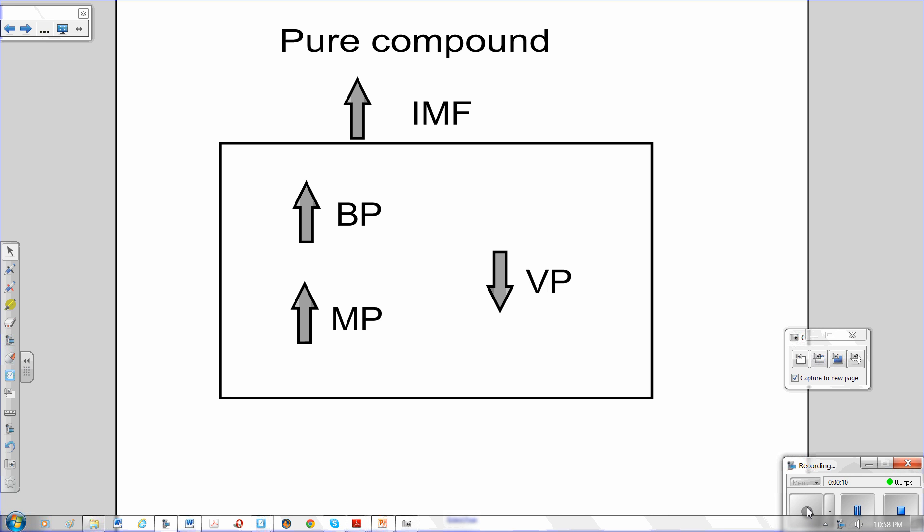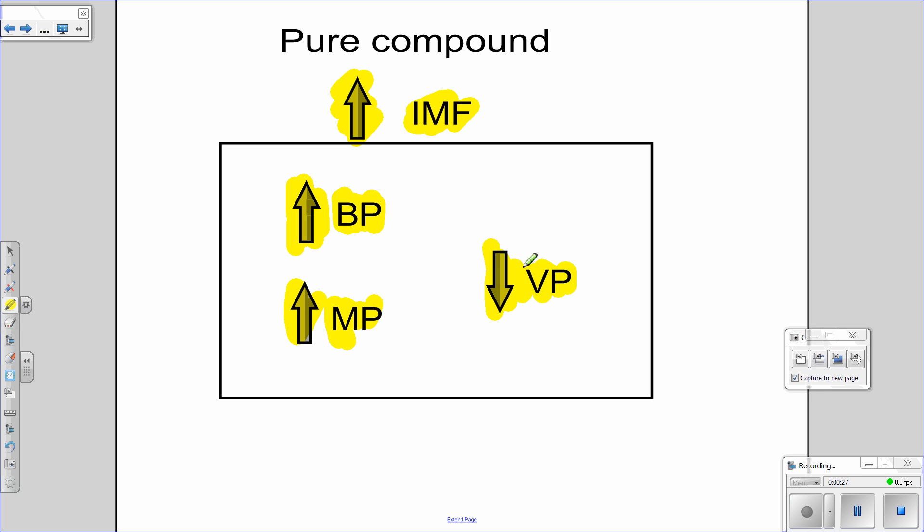Remember, intermolecular forces are how sticky molecules are. The more sticky they are, the greater the intermolecular forces. So if you have greater intermolecular forces, what does it mean? How do we tell? It means the greater the intermolecular forces, the higher the boiling point, higher the melting point, or lower the vapor pressure. So vapor pressure is the only one that goes the opposite way.